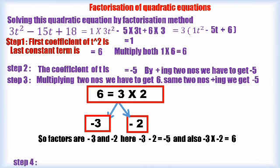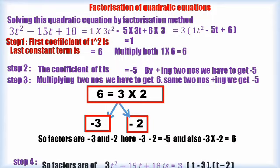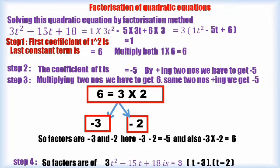So factors of 3t² - 15t + 18 is equivalent to 3. This is 3. Here, all those terms here, multiples of 3. That's why we have taken out that 3. That 3 must be written here. 3 × (t - 3) × (t - 2).